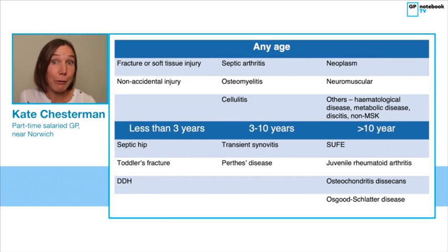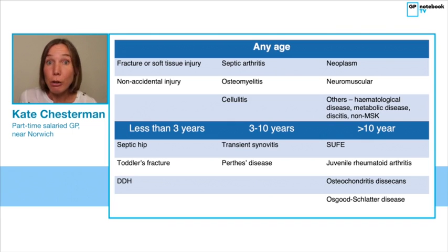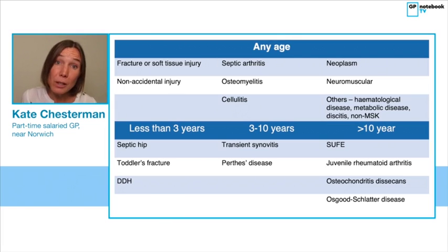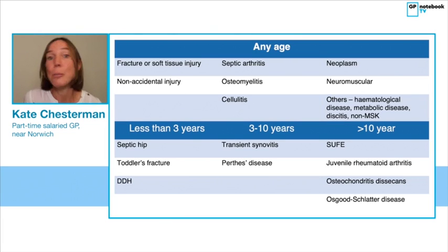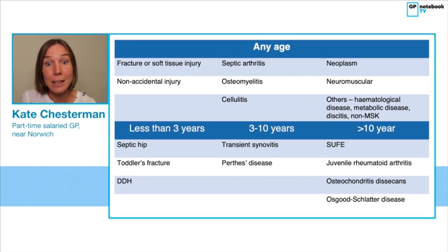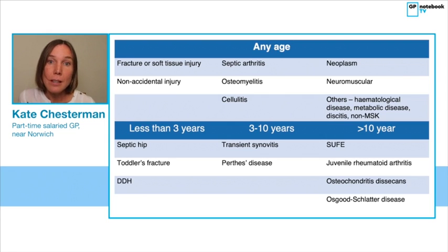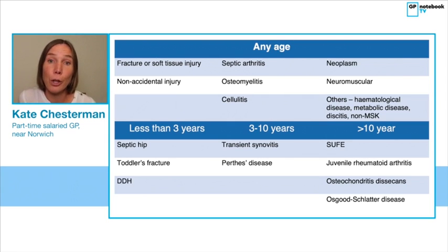There are thankfully some rarer conditions: neoplasms, neuromuscular conditions such as muscular dystrophy, haematological disease such as sickle cell which can cause joint pain, metabolic disease — we know that rickets is on the rise — discitis, and also be aware of non-musculoskeletal presentations. So intra-abdominal pathology or inguino-scrotal pathology may also cause a child to limp.